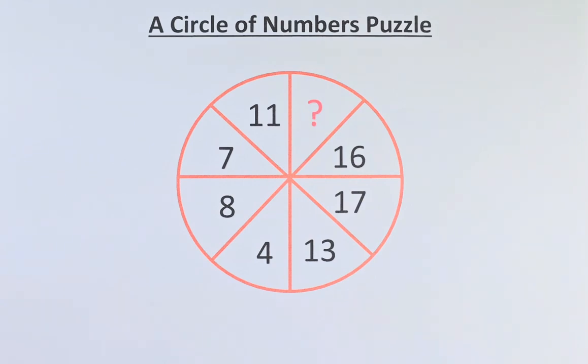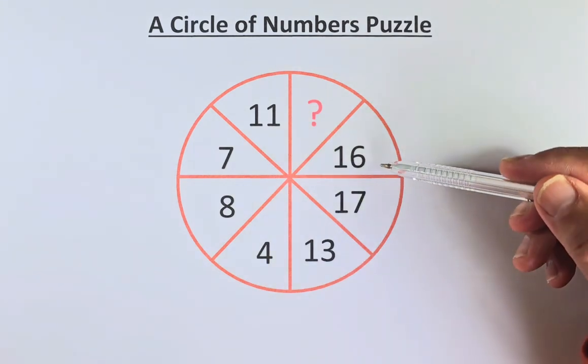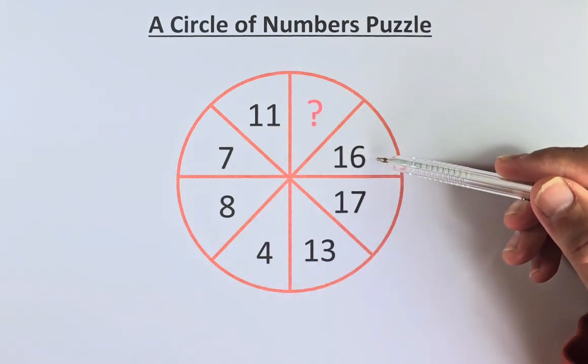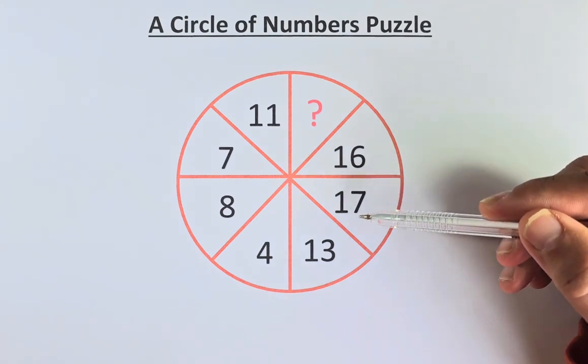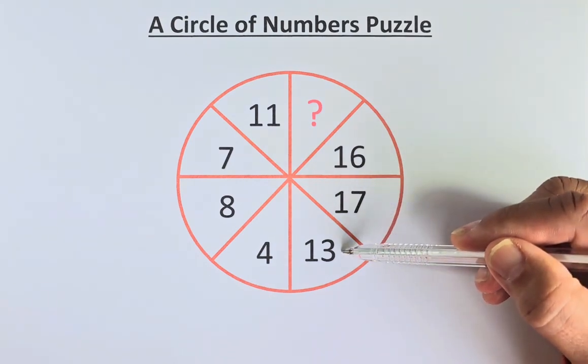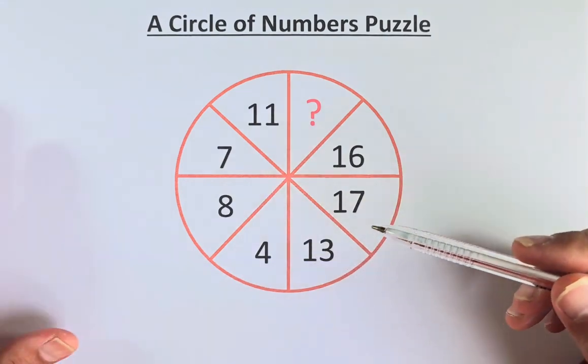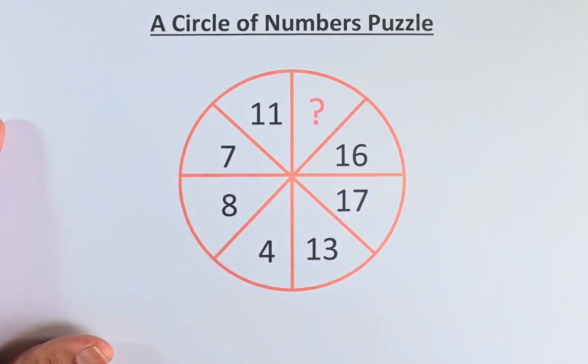In the normal circle of numbers puzzle, you try to find the difference or the addition of the next number. 16 to 17 is 1, 17 to 13 is plus 4, 13 to 4 is minus 9 and if you look at it, it doesn't make sense.